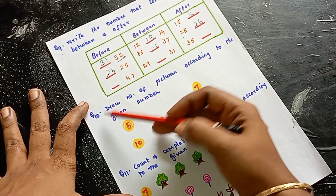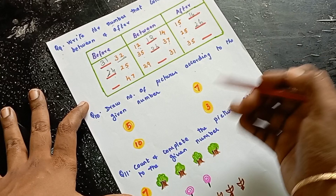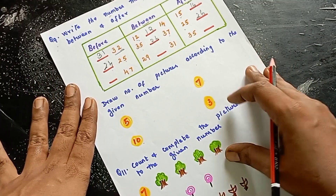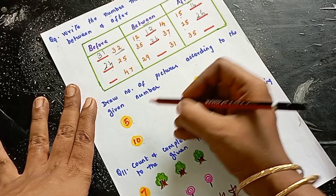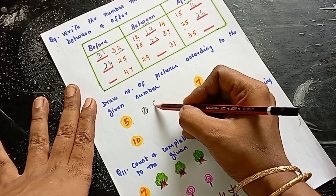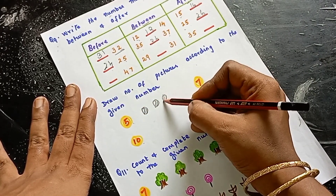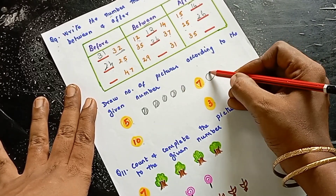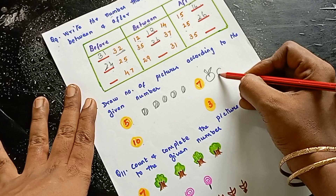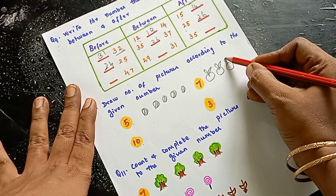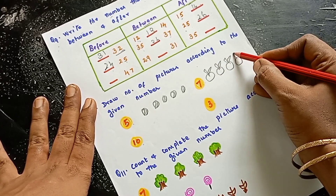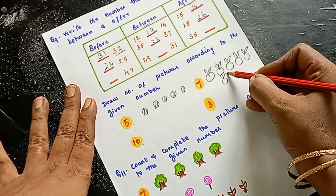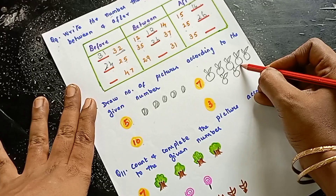Question number 10: draw the number of pictures according to the given number. Here are numbers — draw any random pictures matching the number count. For example, draw 3 pictures, then 5 pictures, then 6, then 7.